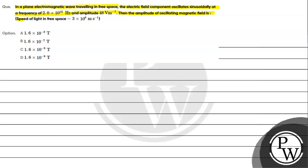magnetic field. The speed of light in free space is given as 3×10^8 meters per second. The options are: A) 1.6×10^-8 Tesla, B) 1.6×10^-7 Tesla, C) 1.6×10^-6 Tesla, and D) 1.6×10^-9 Tesla.